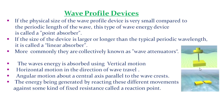The energy is generated by reacting these different movements against some kind of fixed resistance called a reaction point. The waves are moving in the horizontal motion and the absorber is moving in the vertical direction. These movements produce a particular resistance, and this resistance produces the reaction point.